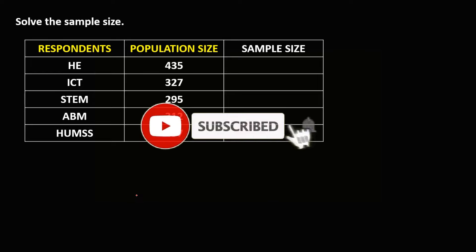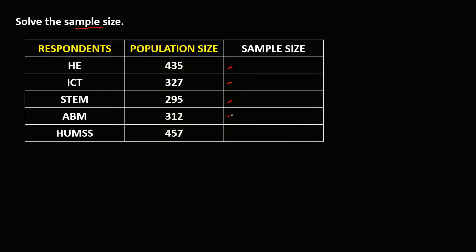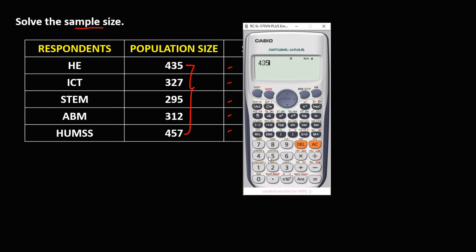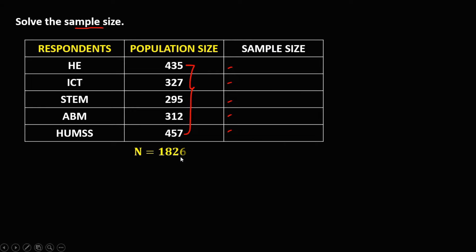Let's have this problem. To find the sample size for every respondent, first we need to find the total population size. Just add all the numbers: 435 plus 327 plus 295 plus 312 plus 457, which equals 1,826. So the total population size, the big N, is 1,826.